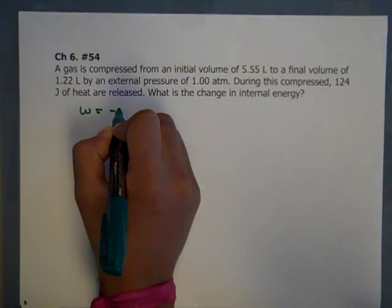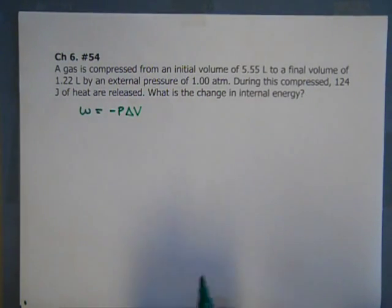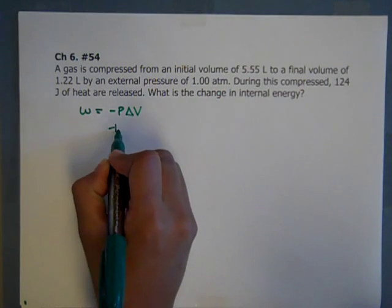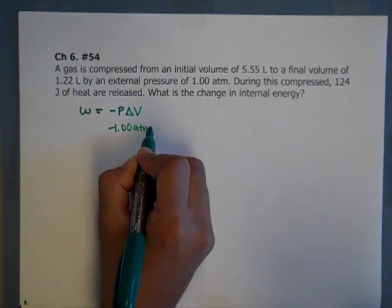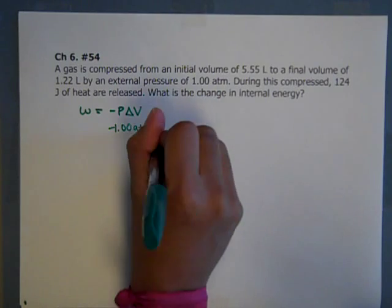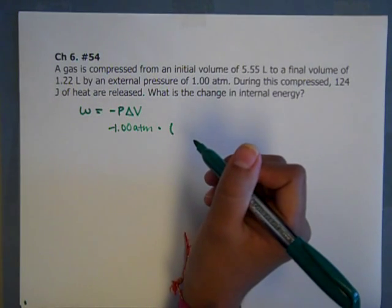So we know work equals negative P delta V. Then we know that the negative P part is going to be negative 1 atmosphere. And the delta V part is going to be the final minus initial, as like the changes are.